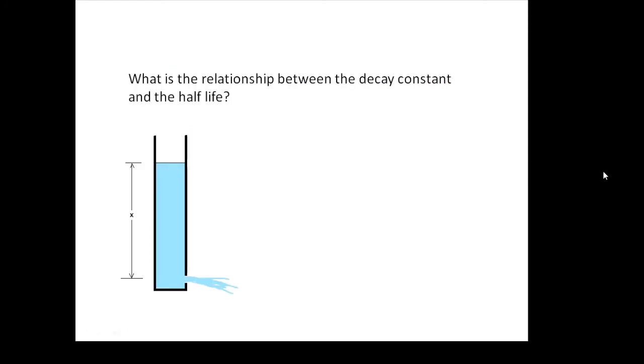What's the relationship between the decay constant and the half-life? This is important. Consider this. Now a bigger decay constant, for example, a bigger hole for the water to come out, would mean that the half-life would be smaller. The relationship is that the half-life is inversely proportional to the decay constant. If you've got a big decay constant, you'll have a small half-life and vice versa.